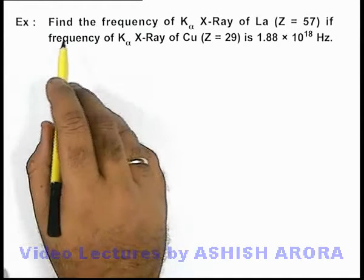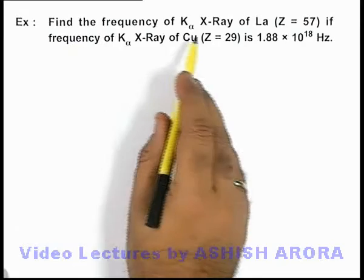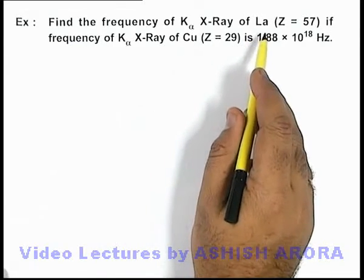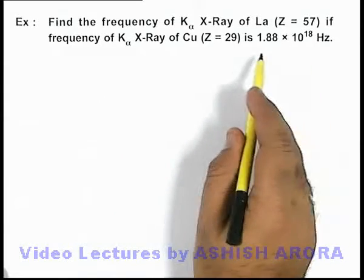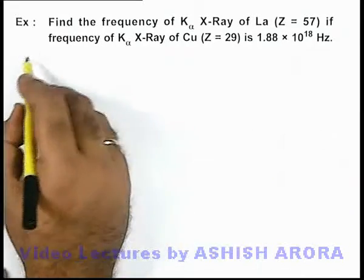In this example we are required to find the frequency of K alpha X-ray of lanthanum if the frequency of K alpha X-ray for copper is given as 1.88 into 10 to power 18 hertz.